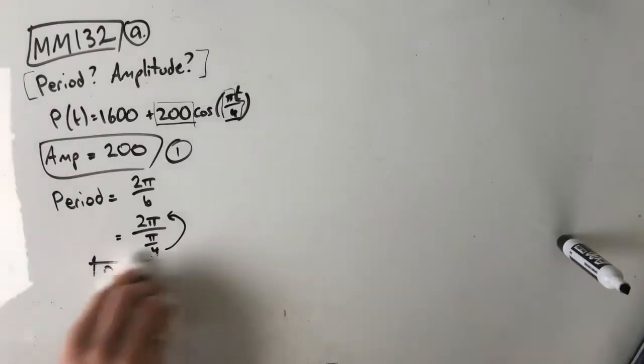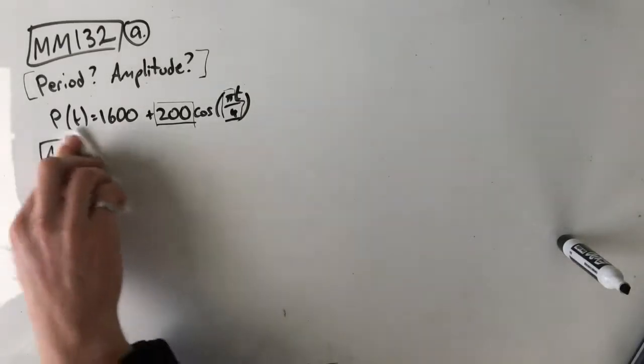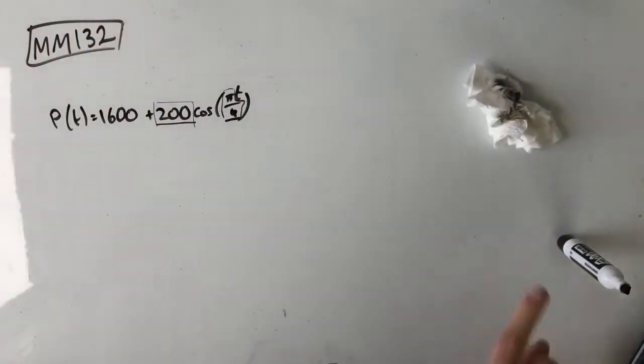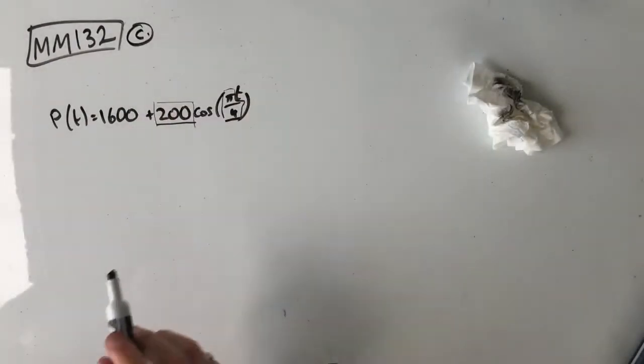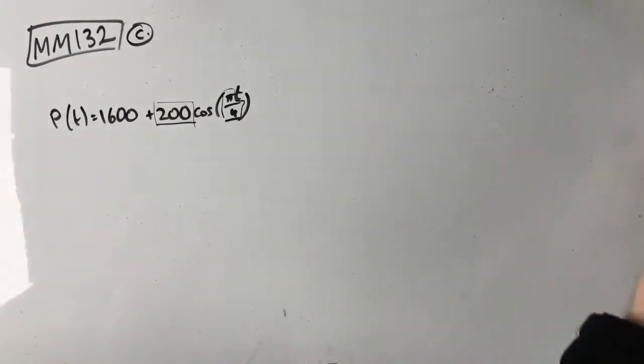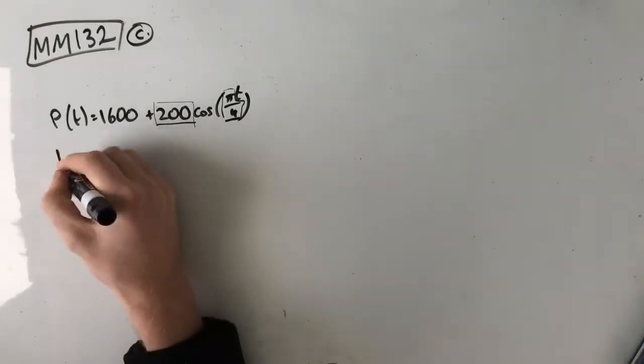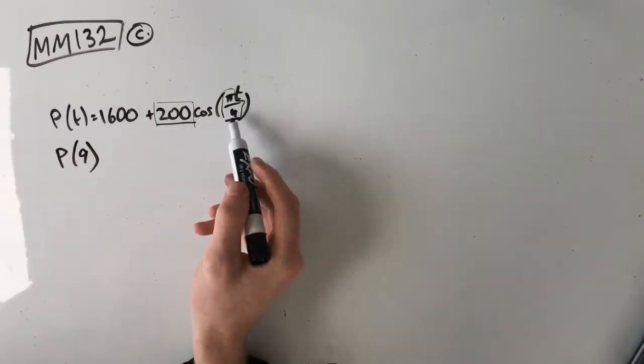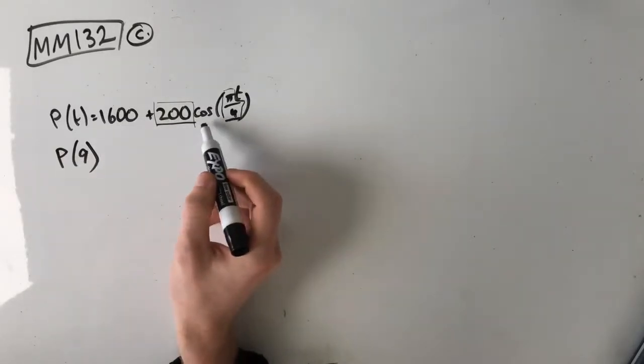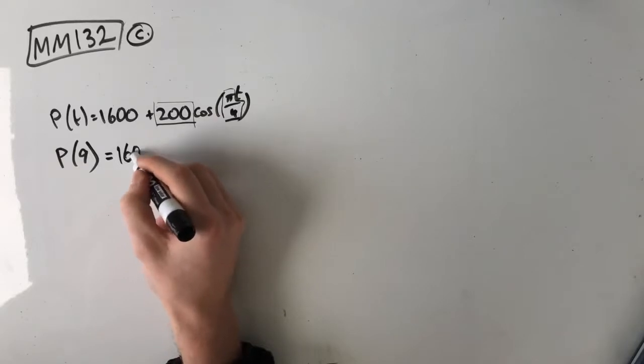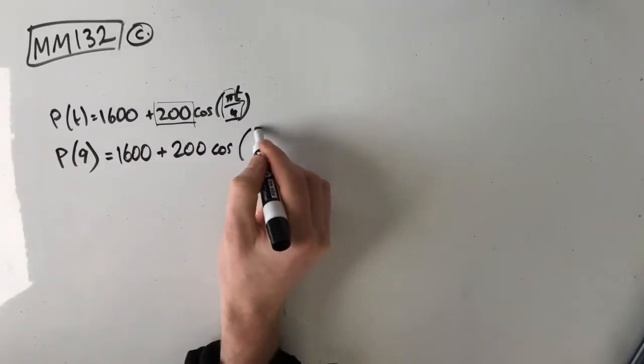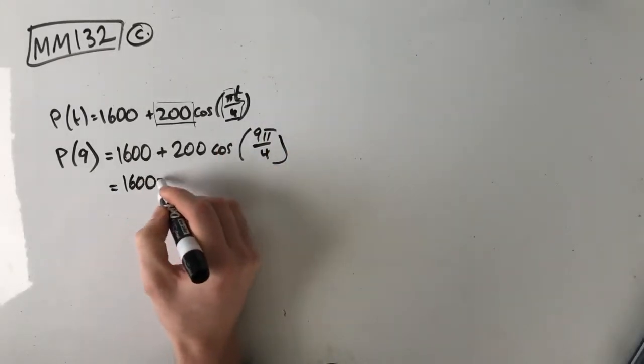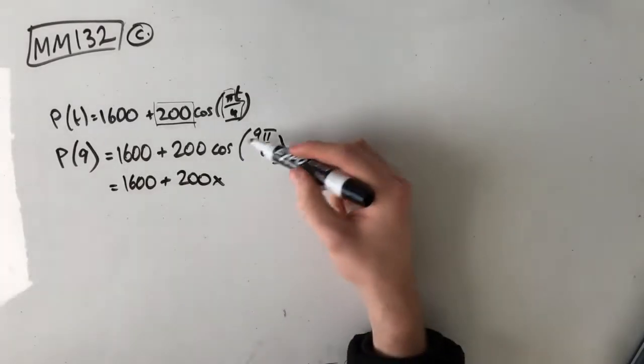Part c asks us to find p of 9 to the nearest whole number. So p(t) equals 1600 plus 200 cos of πt over 4, which means that p(9) is the same as this but with t replaced with a 9. So 1600 plus 200 cos of 9π over 4, because all we're doing is just replacing this t with a 9.